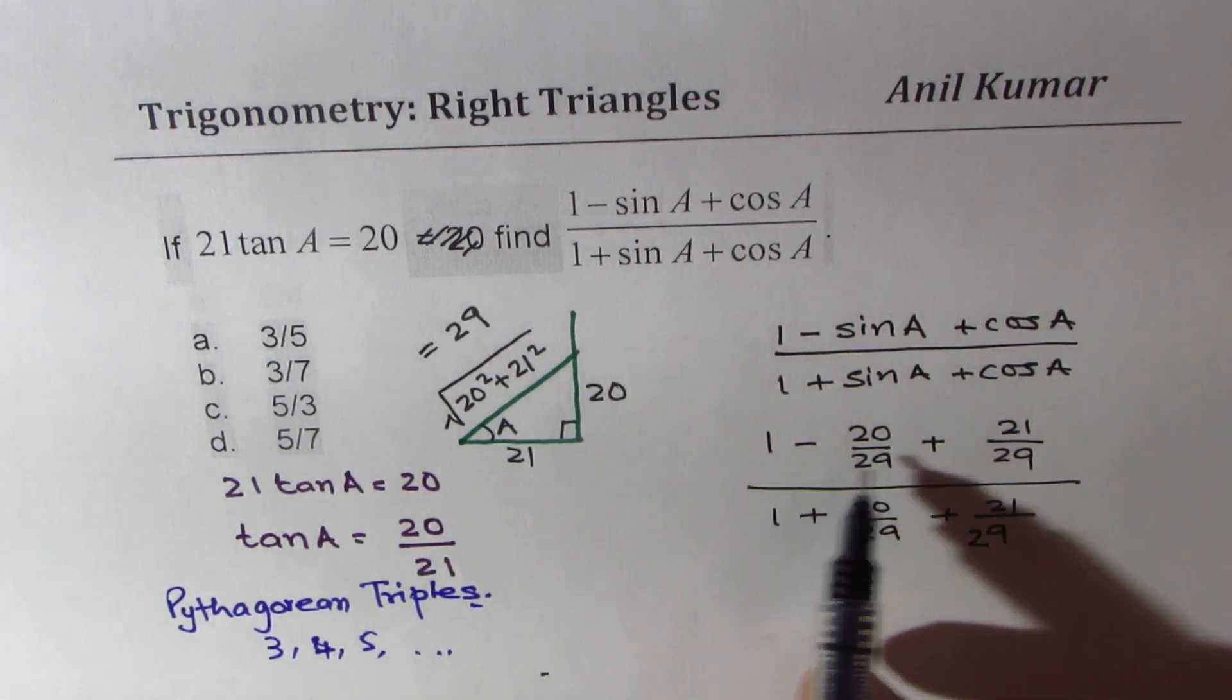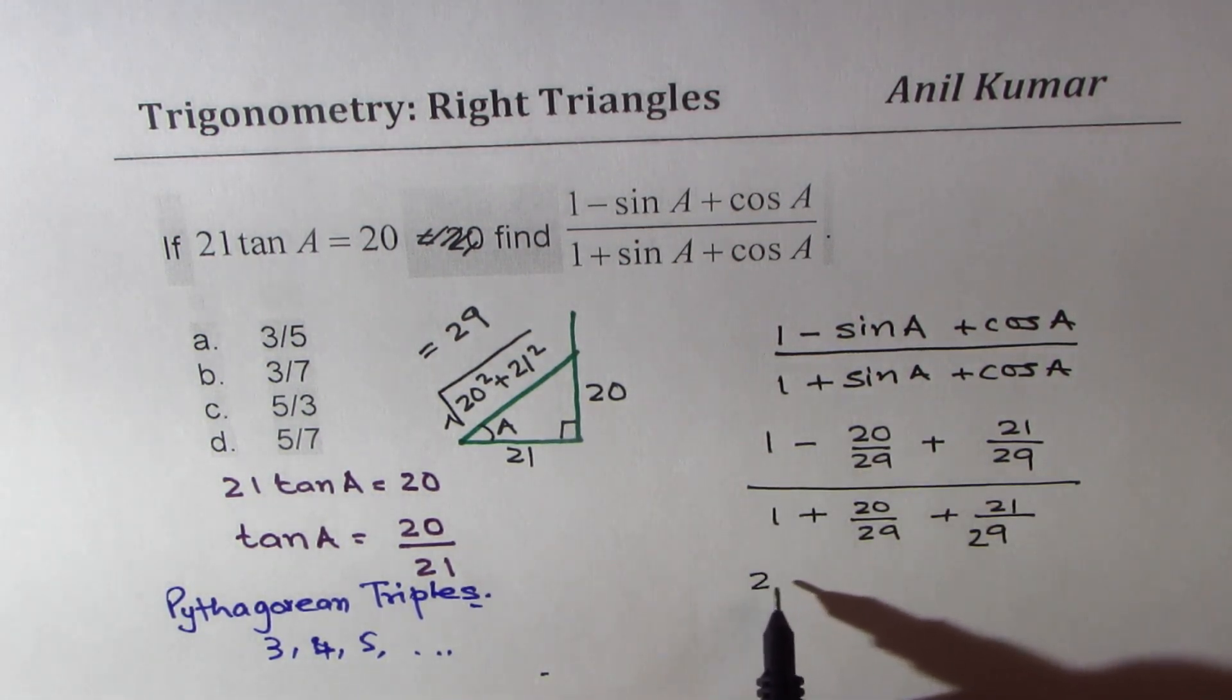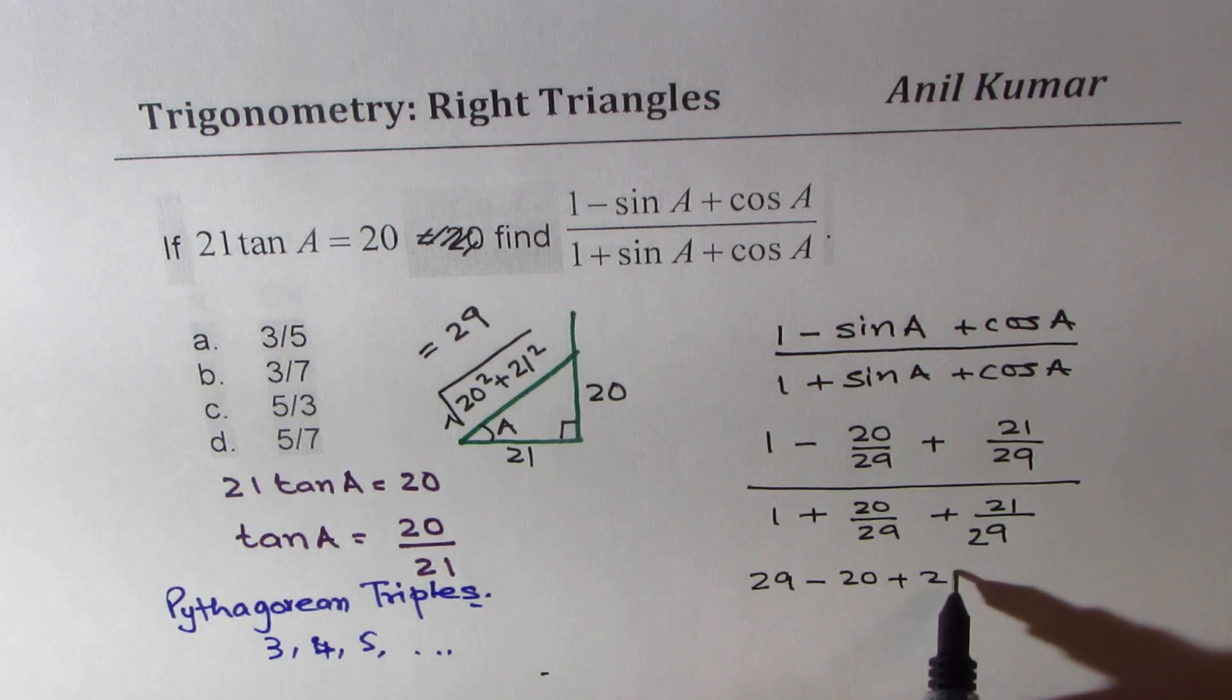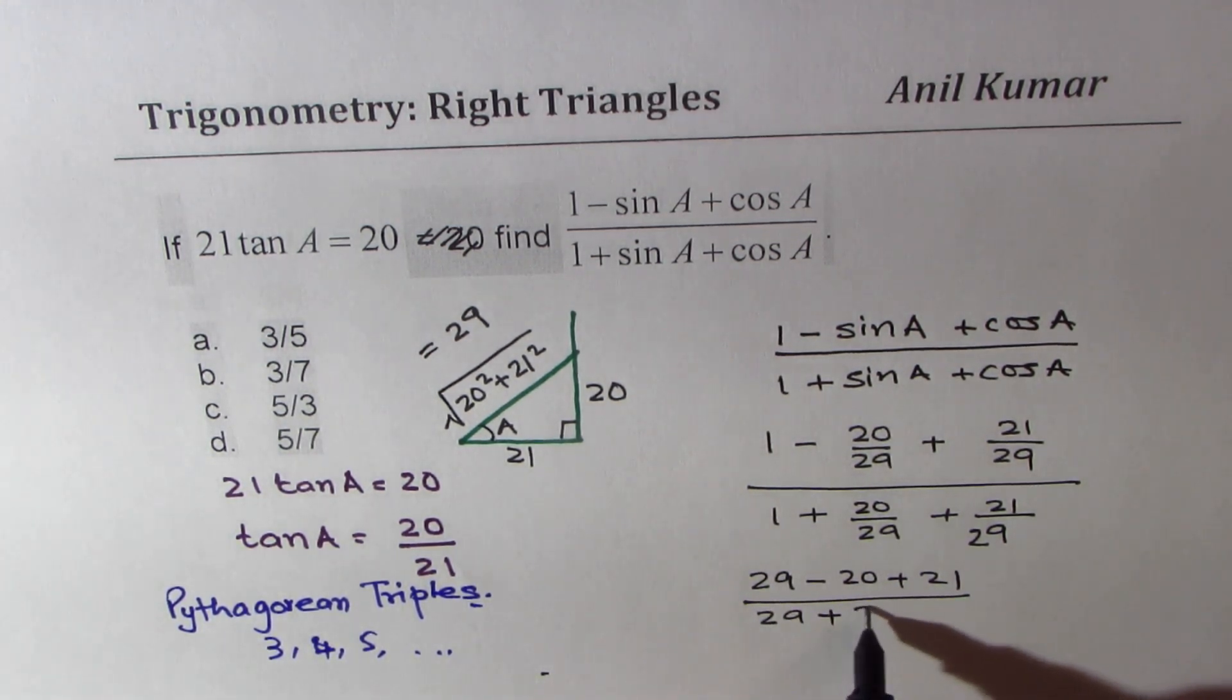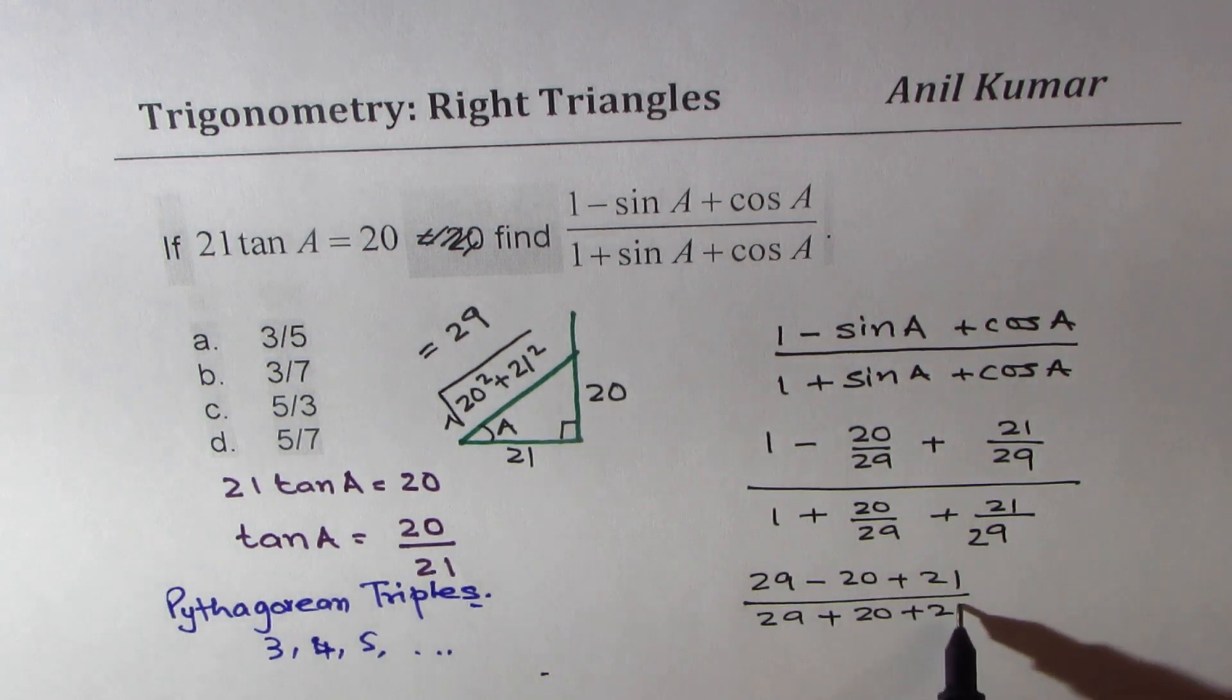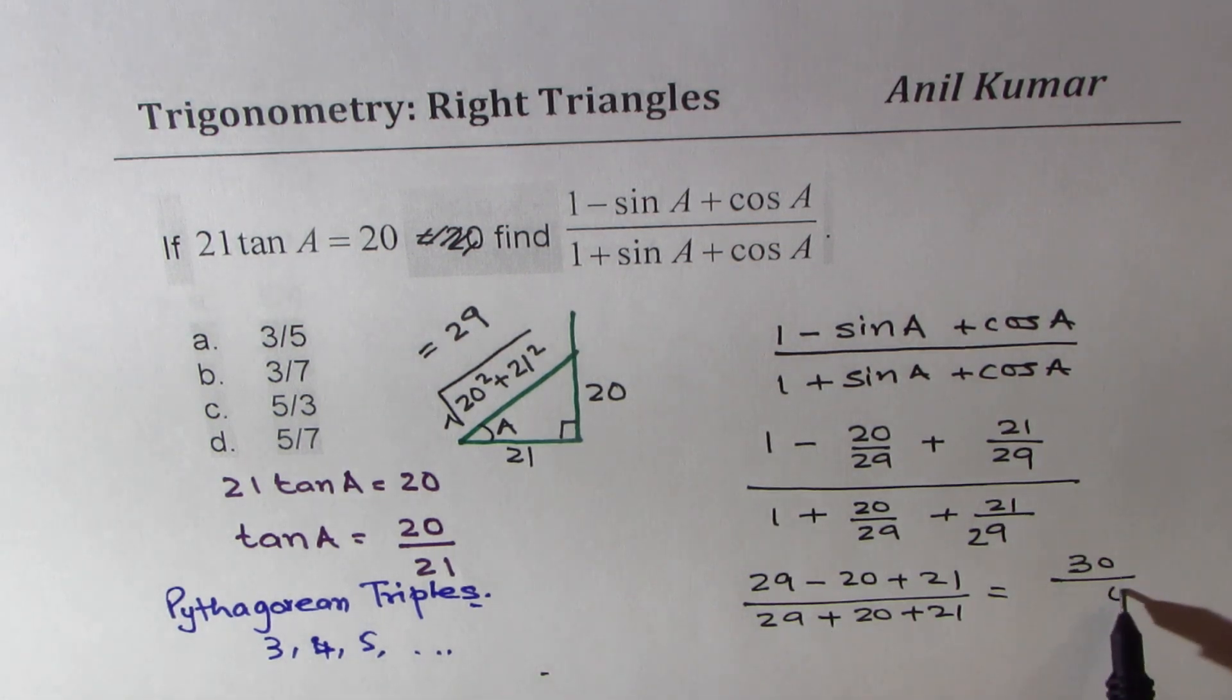So multiplying by 29, we get (29 - 20 + 21) over (29 + 20 + 21). Now if I take away 20 from 21, I get 1, so I get 30 over 70. So we get 3 over 7 as our solution. So 3 over 7 is option B. So you see how we can find this solution without calculator.